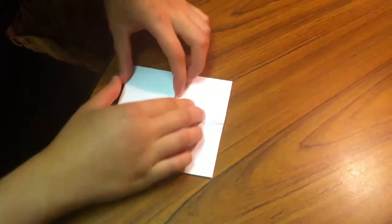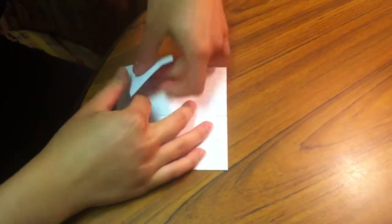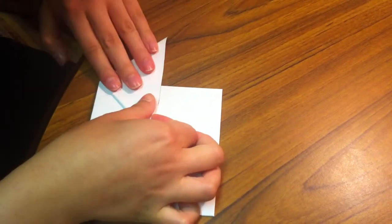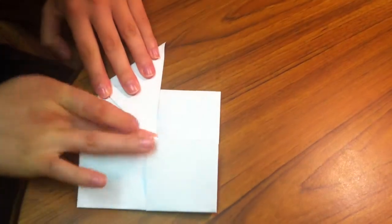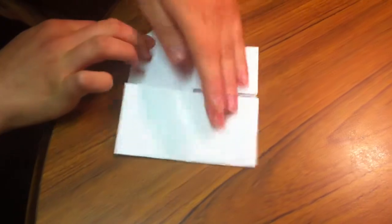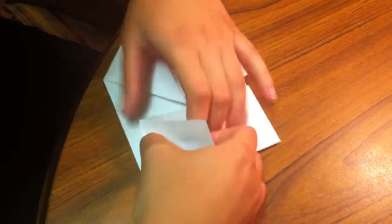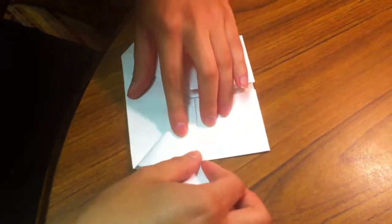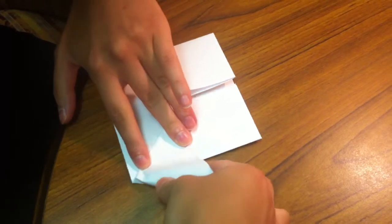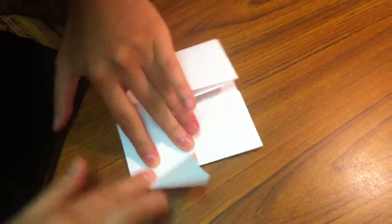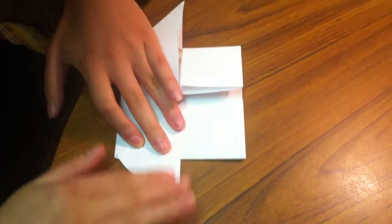You're going to want to valley fold these corners out to form little triangles. Turn the crease down with your finger so that you get a nice sharp crease, which will make your house look better. Flip it over and you're done.